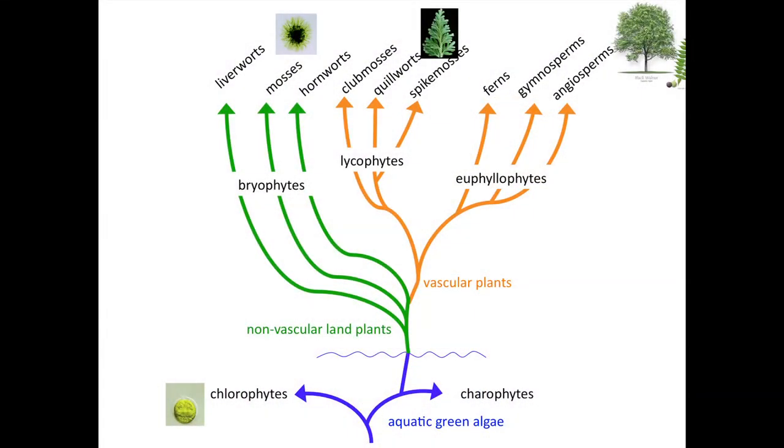I'm going to teach you everything you need to know about plant evolution — 600 million years in just one minute. Basically, and this is an oversimplification, there are four major groups of plants that have ever lived on this earth. I'm talking about green plants: the green algae, the bryophytes, the lycophytes, and the euphilophytes. I want to point out some of the major transitions and innovations that occurred through this 600 million years of evolution.